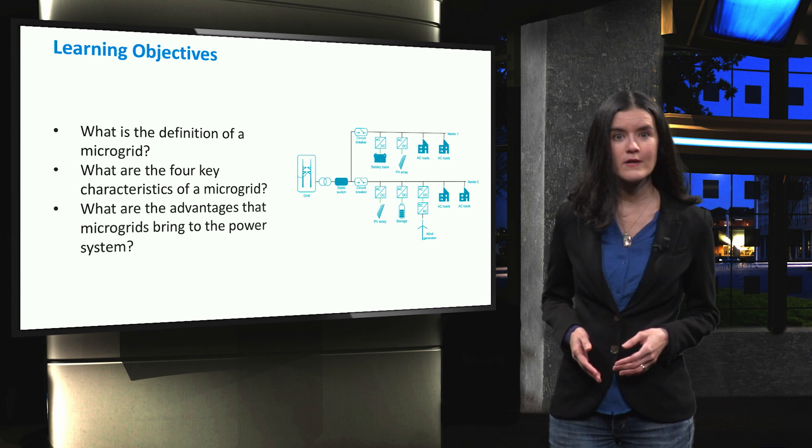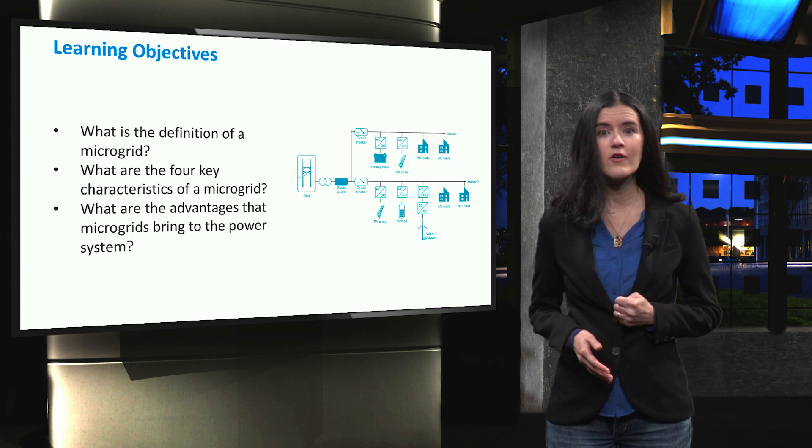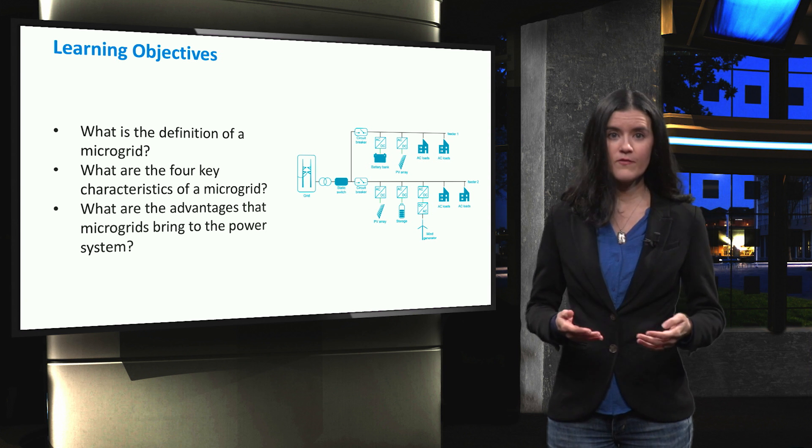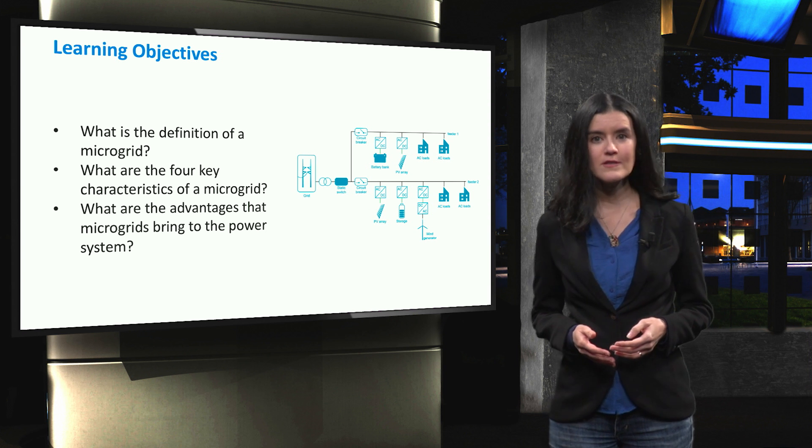We will identify what are the four main characteristics of a microgrid, how can a microgrid be represented and its advantages when compared to the traditional distribution grid.